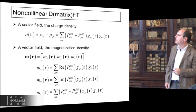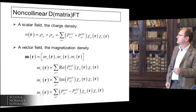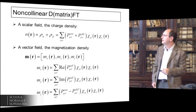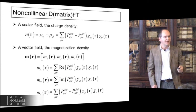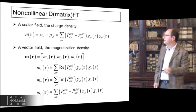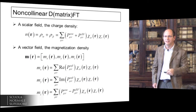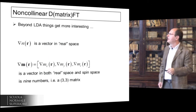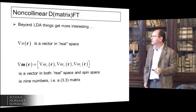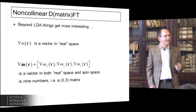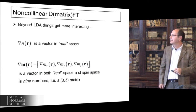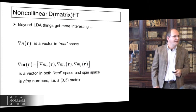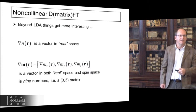This is how the non-collinear density and magnetization vector density look. The charge density is just the sum of the alpha and beta density matrix elements with the atomic basis functions. The vector magnetization densities: the x and y components are the real and imaginary parts of the alpha-beta block; the z component is what looks like the spin density if the off-diagonal blocks were zero — the difference between alpha and beta. Beyond LDA, things get a lot more interesting because the gradient of the magnetization density is a strange thing: it's nine numbers, a matrix with one index for the Cartesian component and another for the spin component.